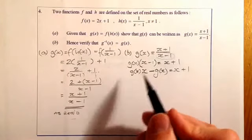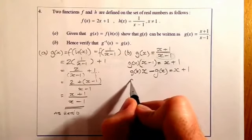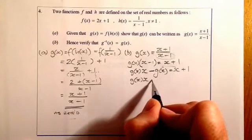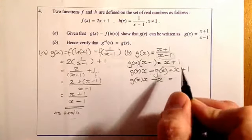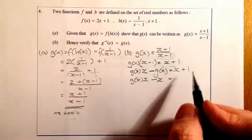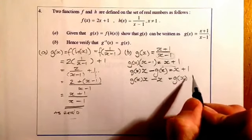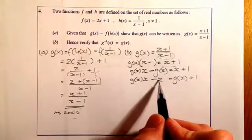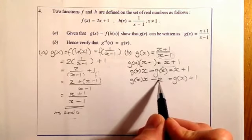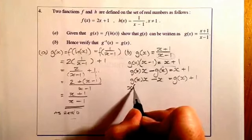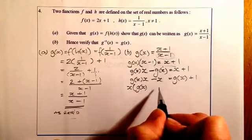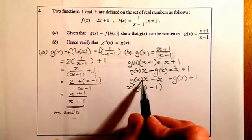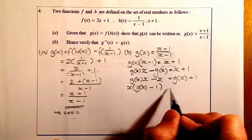I'll then get all the x terms over to one side. I've got g of x times x — I'm going to bring that x over to the left-hand side, giving minus x. This g of x I'm going to take over to the other side as a positive, and that's plus 1 already there. To get x on its own, I'll take a common factor of x out of these two terms. That'll give me x times the bracket g of x minus 1. So I've just factorised that part.